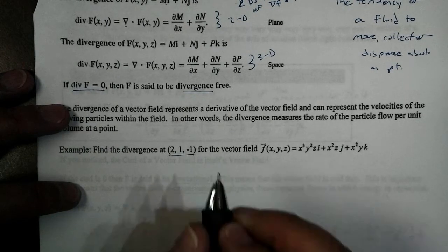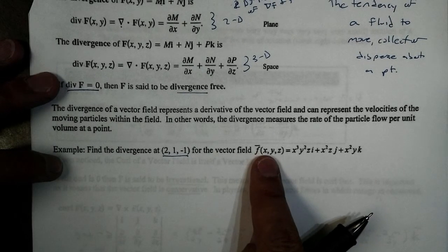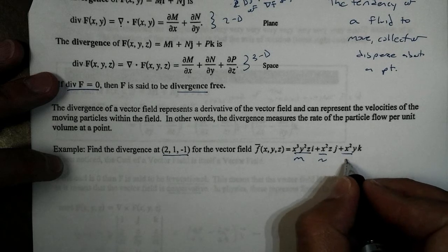So, we're given this point (2, 1, -1), and we want to find the divergence of our vector field. Well, notice this is in three-dimension. There's M, there's N, and there's P.